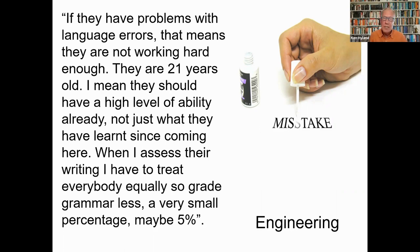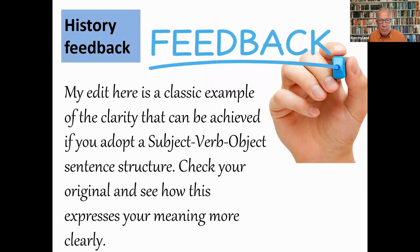The texts marked by science teachers seemed hurriedly checked rather than carefully read. Teachers in the social sciences, in contrast, offered more explicit commentary on language. A history tutor wrote: 'My edit here is a classic example of the clarity that can be achieved if you adopt a subject-verb-object sentence structure — check your original and see how this expresses your meaning more clearly.' Similarly, a business teacher wrote: 'Avoid long sentences — before you have control over sentence structure, use a single sentence for each point. This will allow readers to see your argument better.' So an English teacher might have given that feedback.